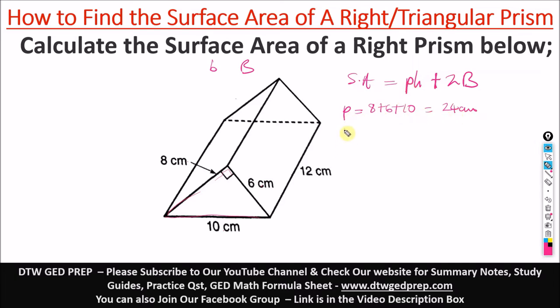Then the height of the prism. Height of the prism, not height of the triangle. Height of the prism is from here to here, that's the height of the prism. That's how long the prism is, that's the distance between the two bases, and that is 12 centimeters.